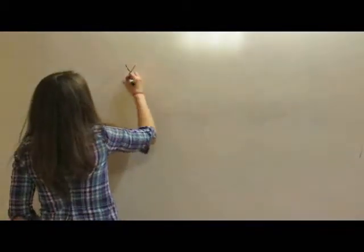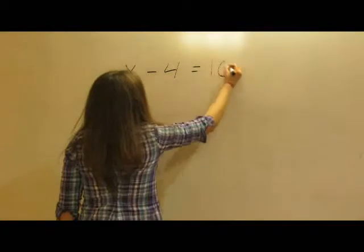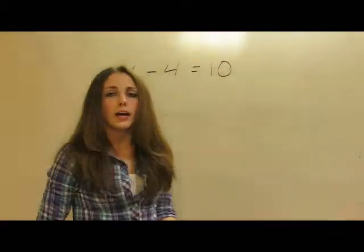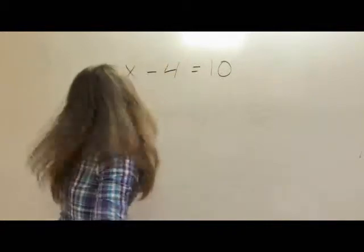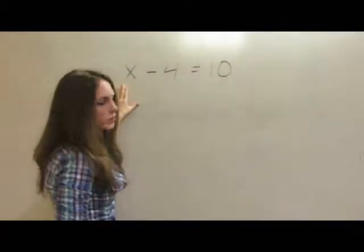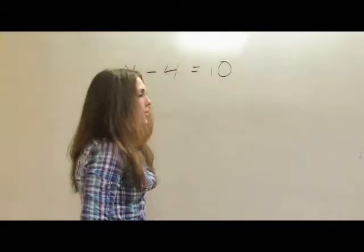So let's start with x minus 4 equals 10. This is fairly simple and in order to solve an equation we need to isolate x on one side of the equation, which basically means get it by itself on one side of the equal sign.